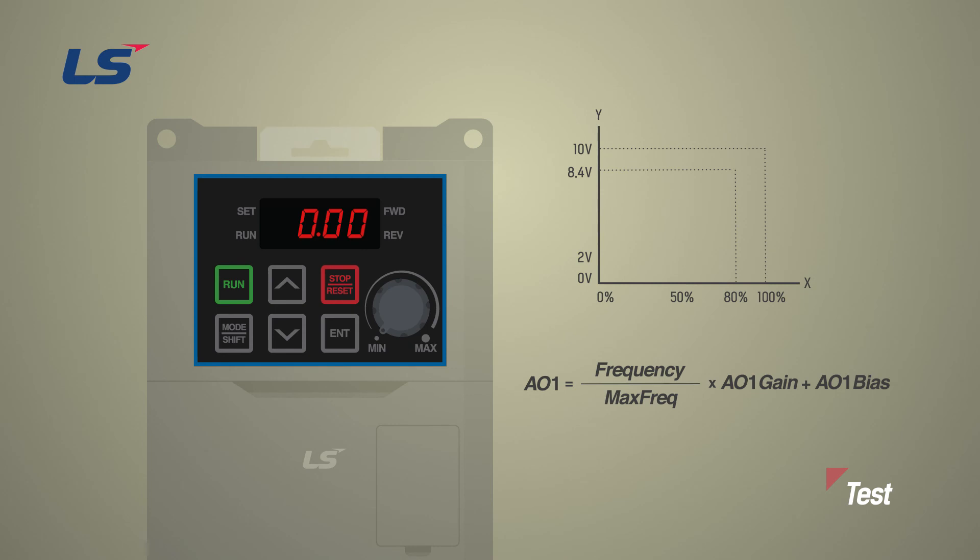Next, we will test the analog output. Bias is set to 20%, and gain is set to 80%, and the graph is drawn according to the output frequency as shown on the screen.